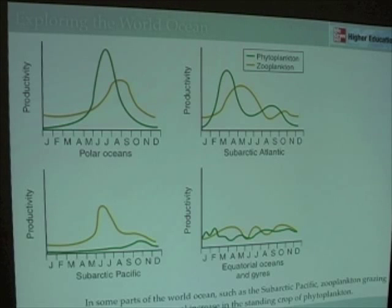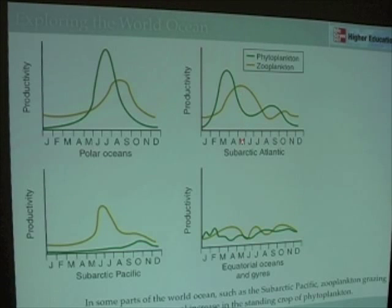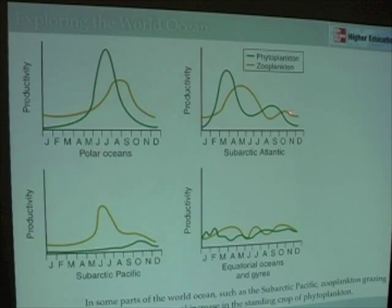Zooplankton kind of mirror the phytoplankton in the subarctic Atlantic, in the North Atlantic Ocean. They don't exactly match it because it takes a while for them to increase their numbers. Phytoplankton grow very quickly, and zooplankton, growing more slowly, are now feeding on these phytoplankton and growing more quickly. They reach their maximum abundance in mid-May to June, in late spring and early summer. They then decrease in abundance, and have a little bump in October as a result of the increase in phytoplankton in the fall.